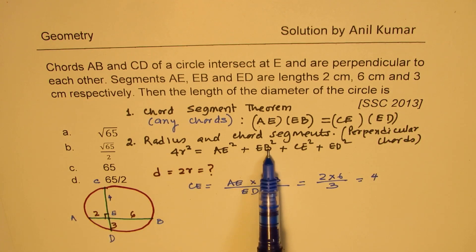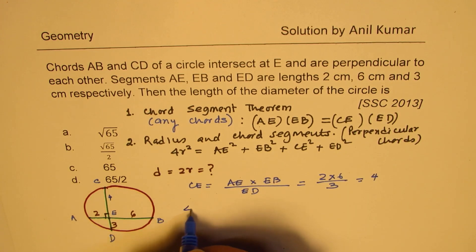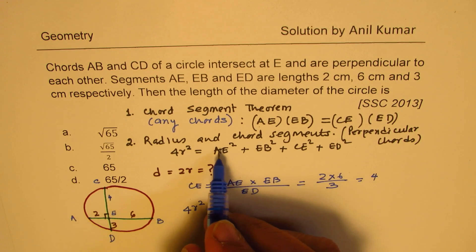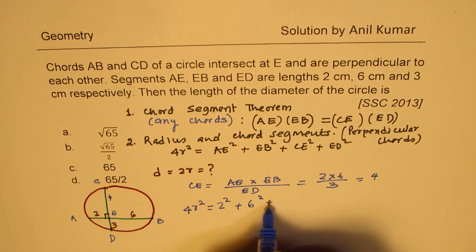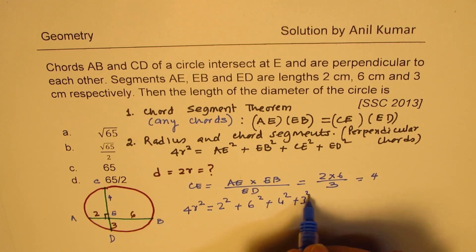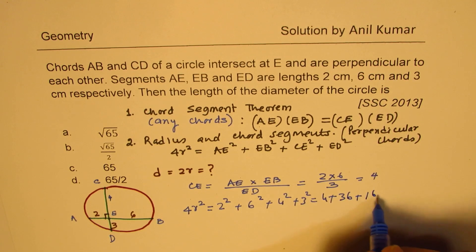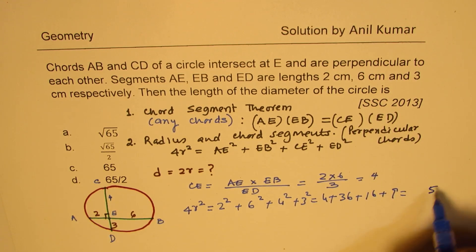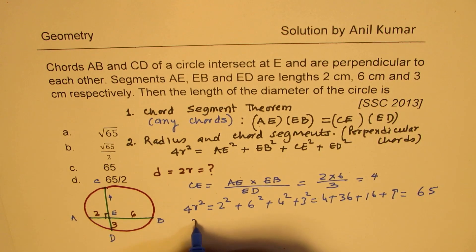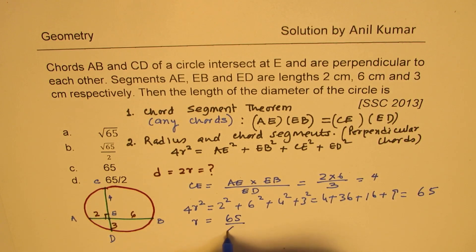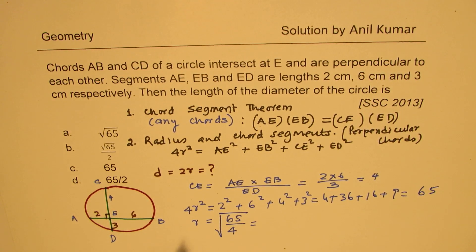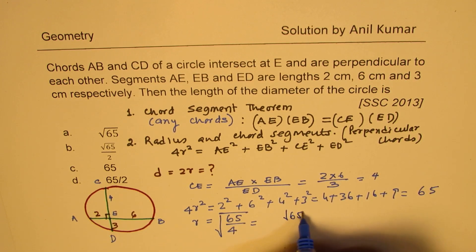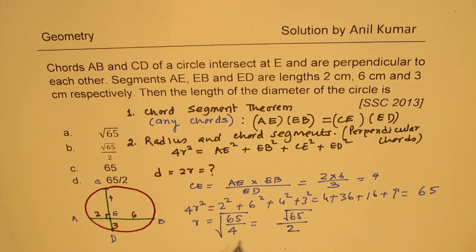Now let's substitute this value here and find the value of radius. So we say four times radius square. We need to find diameter is AE, which is two square plus six square plus now four square plus three square. Which is four plus 36 plus 16 plus nine. So if you add them all, nine and six is 15, 21, 25, we get 65. So R will be 65 over four square root. Now square root of four is two. So we get square root of 65 over two. So that becomes the radius.